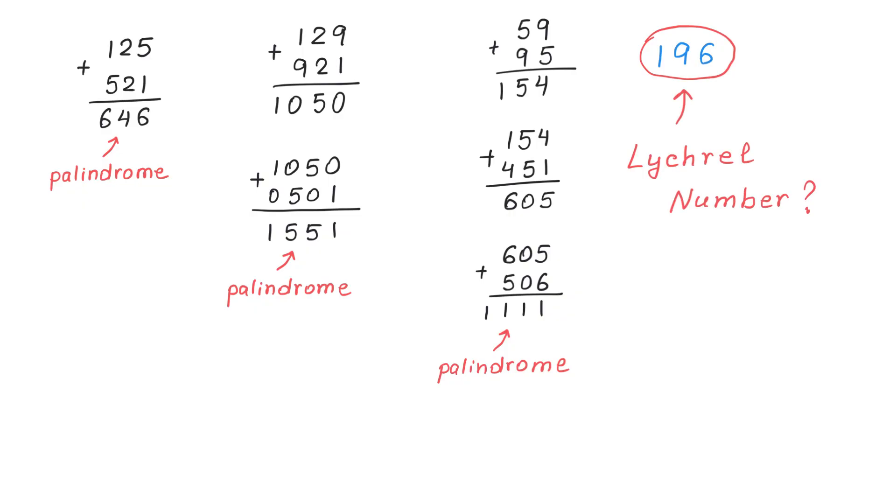Now, a Lychrel number is a number that cannot produce a palindrome. And we can say that the number 196 is a good candidate for a Lychrel number. I hope you enjoyed this video. If you enjoyed this video, please subscribe and thank you for watching.